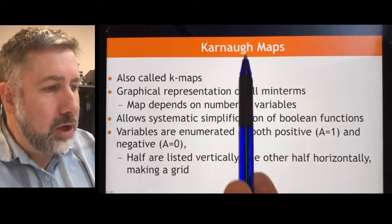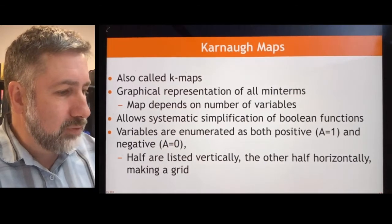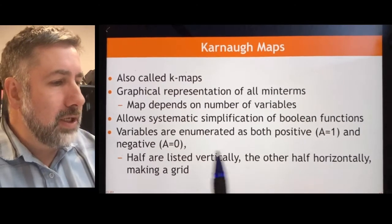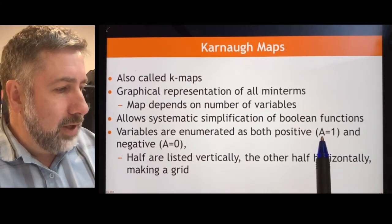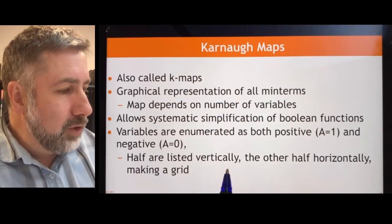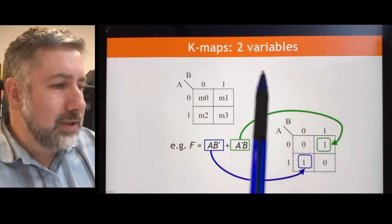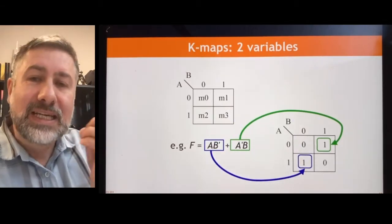So it's called Karnaugh Maps, and it gives us a systematic simplification for Boolean functions. What we do is we enumerate variables that are positive and then negative, and then we're going to list them vertically and horizontally. I'll show you an example first, this will be a lot easier.